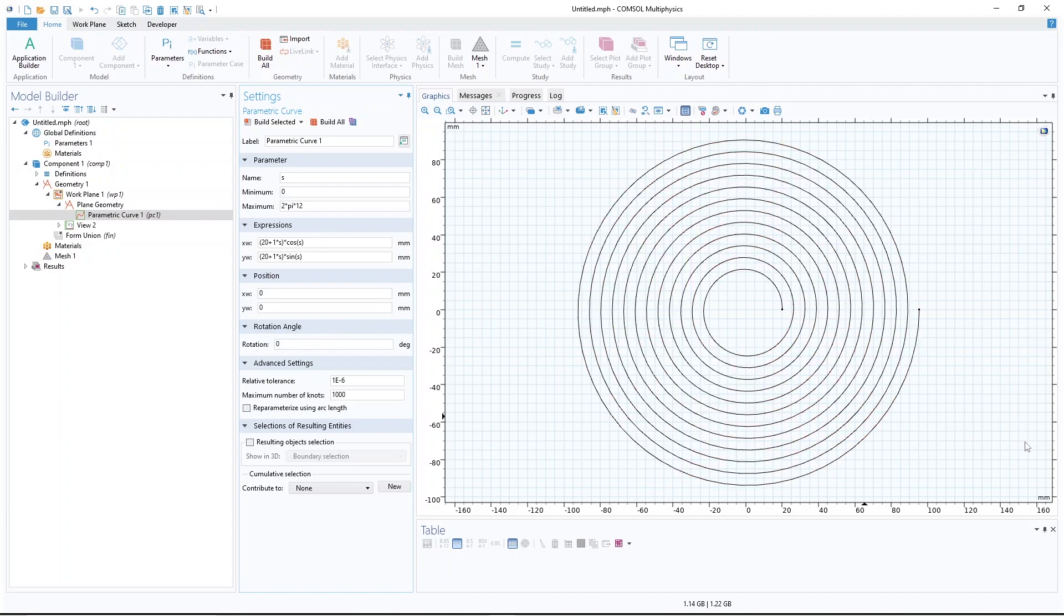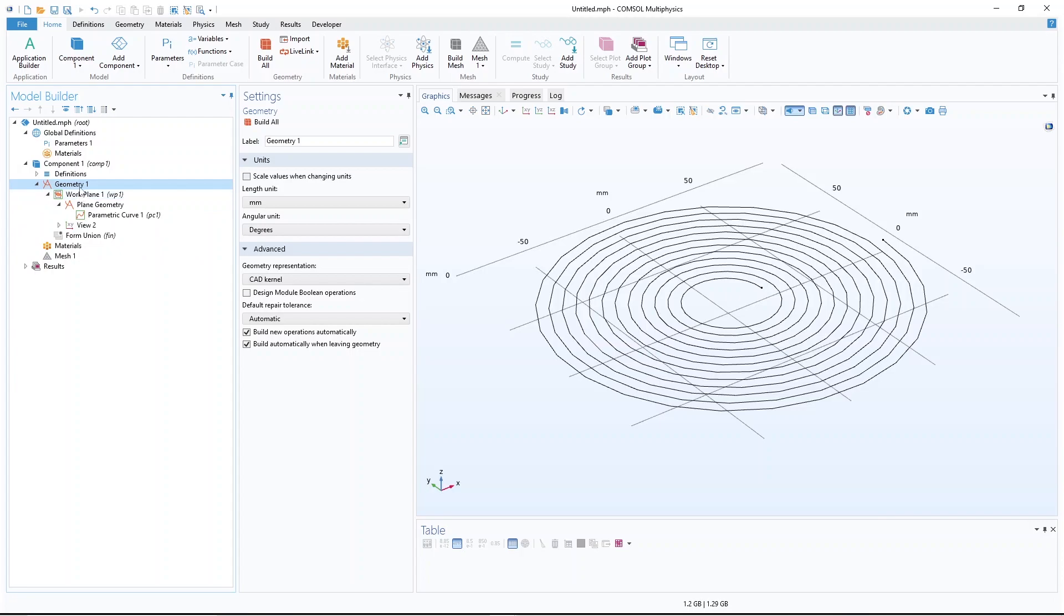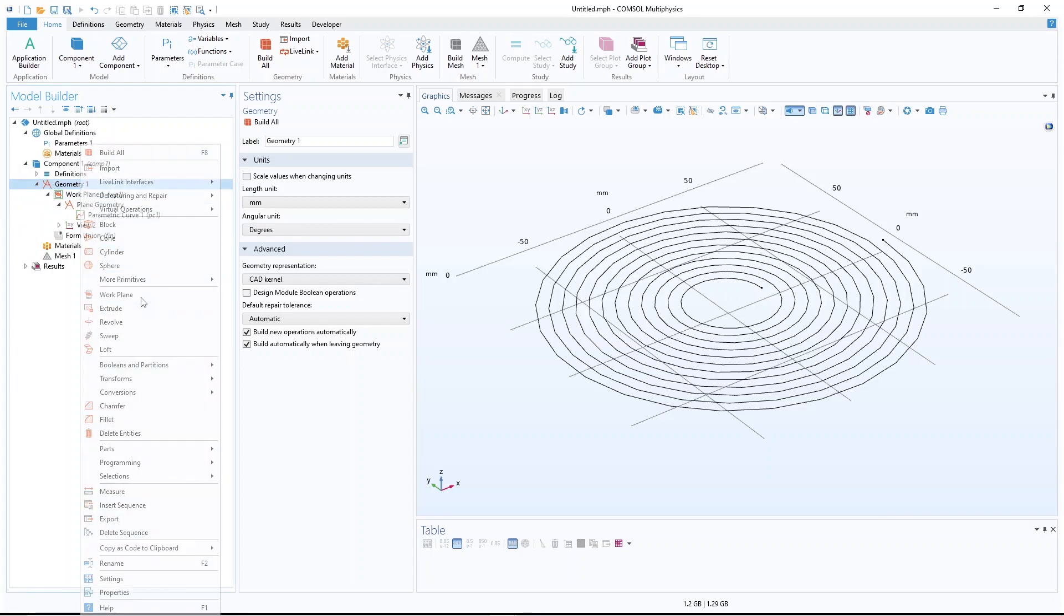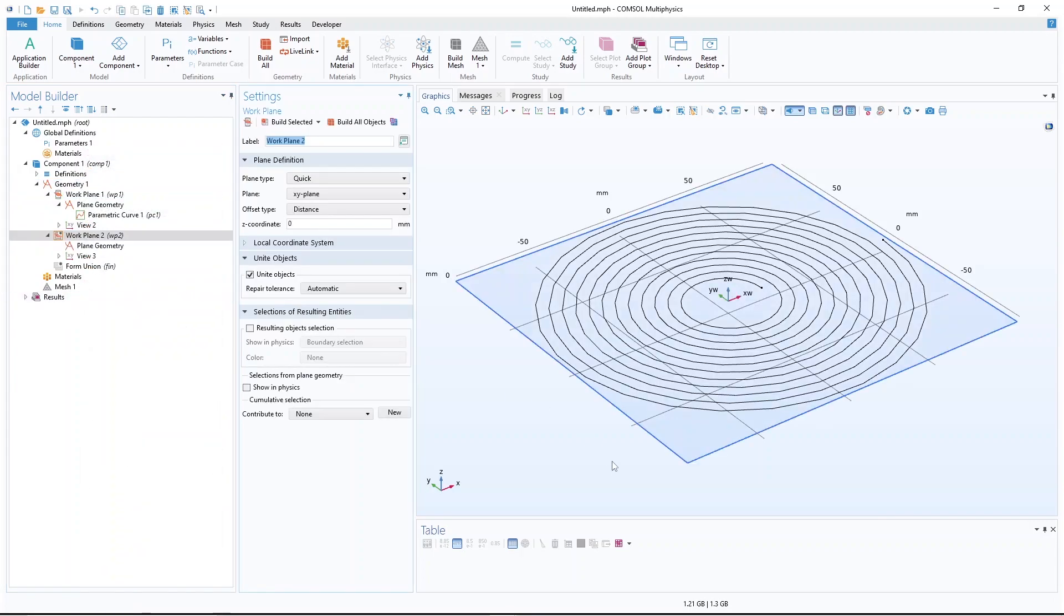Okay, so now we have the spiral. What I'm going to do is that I'm going to make another structure, a rectangle, and then sweep this rectangle over this spiral. Right click on the geometry, create another work plane. I want to make a rectangle that is perpendicular to this, and then I will sweep that rectangle over this curve.